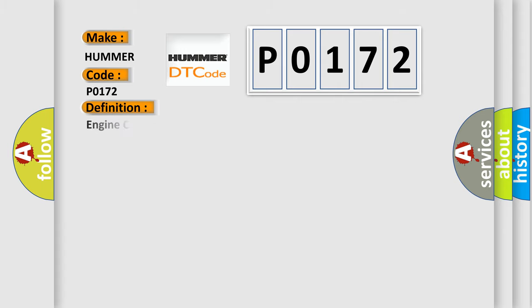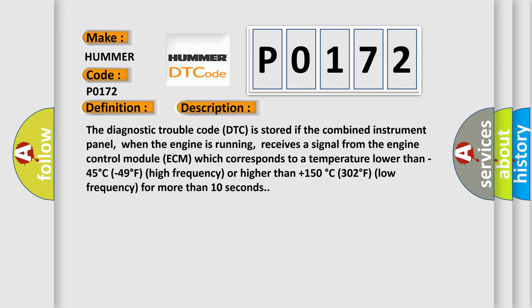The basic definition is Engine coolant temperature ECT sensor signal faulty signal. And now this is a short description of this DTC code. The diagnostic trouble code DTC is stored if the combined instrument panel, when the engine is running, receives a signal from the engine control module ECM